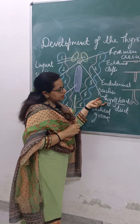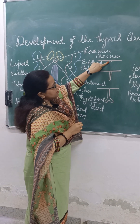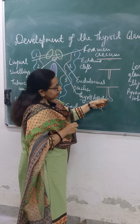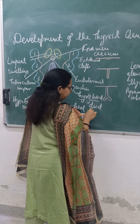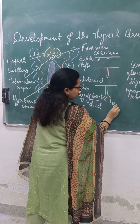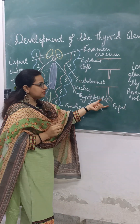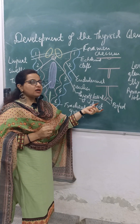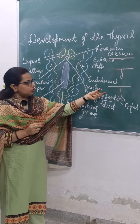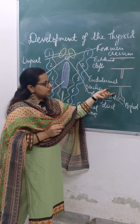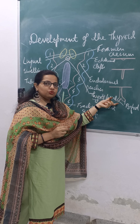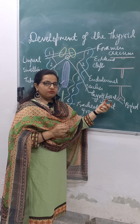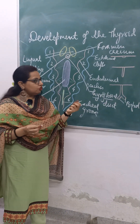It is this thyroglossal duct which grows down — initially as a depression, then it becomes a duct, and finally the end of this thyroglossal duct becomes bifid. The cells proliferate in this bifid structure to form the two lobes of the thyroid gland. This is how the thyroid gland is formed by the growth of the diverticulum, or the thyroglossal duct, which grows in the midline of the neck.